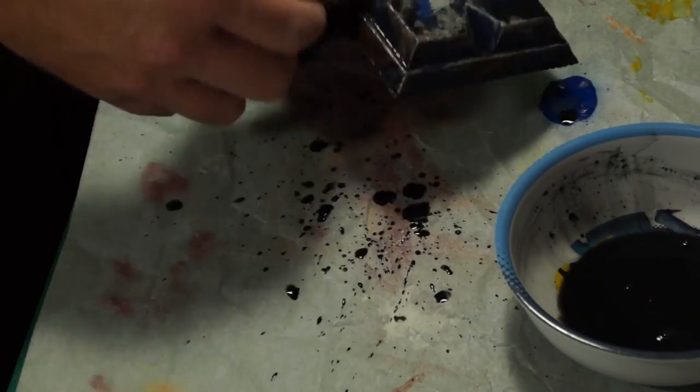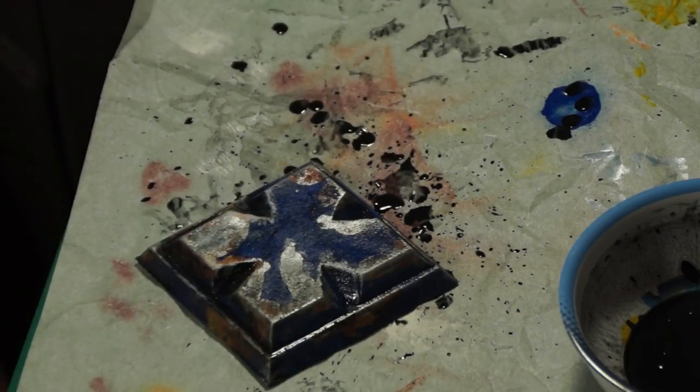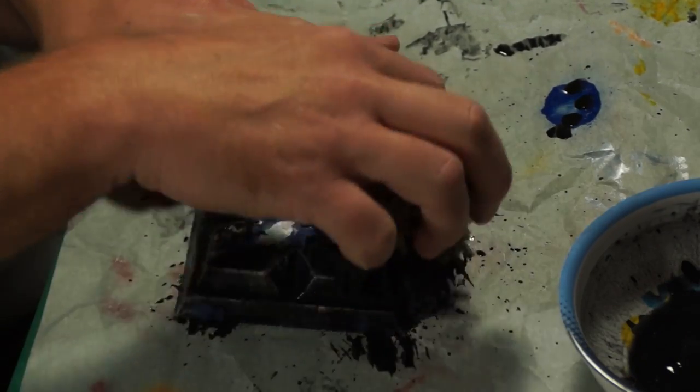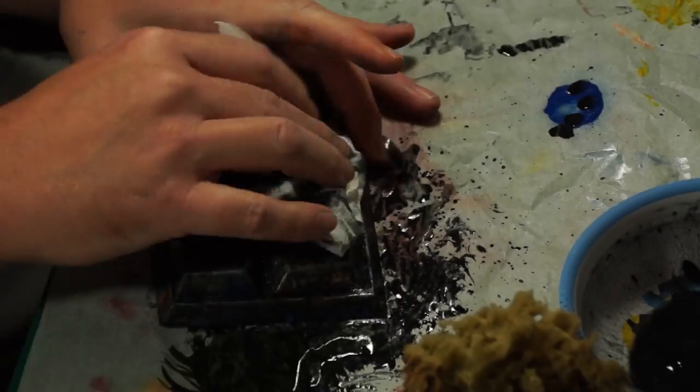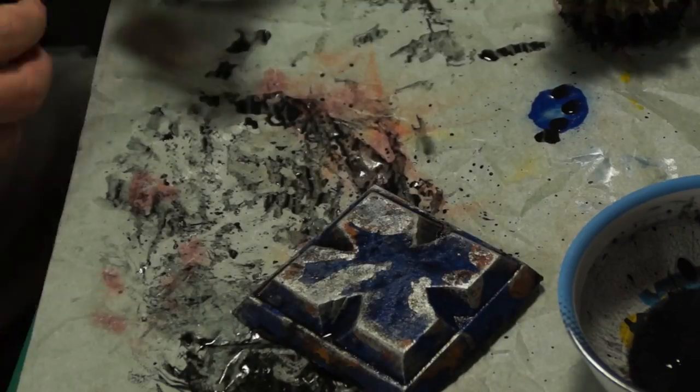Take the black acrylic paint and thin it down a bit with some water. Now take a brush or a sponge to apply the paint to the surface, wiping away excess fairly quickly. This makes it look greasy and grimy in the recesses of the item. You can also add layers of brown as well to make it look dirty.